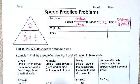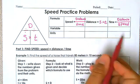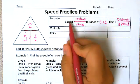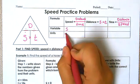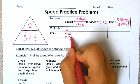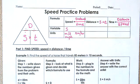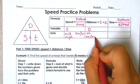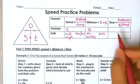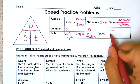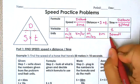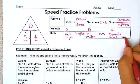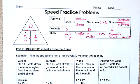Our variables and units: the variable for speed is s, and the units can be meters per second, miles per hour, or kilometers per hour. Distance is d — units include meters, miles, or kilometers. Time variable is t, usually in seconds, hours, or minutes.